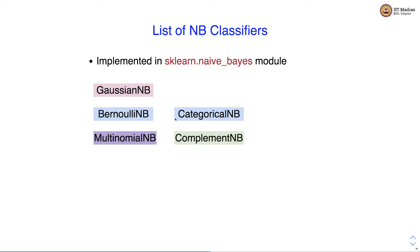In applications like text classification where we assume multinomial distribution, MultinomialNB is used.